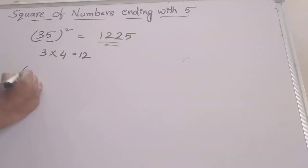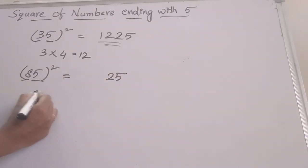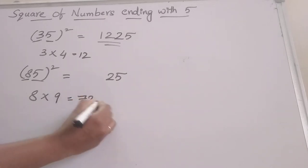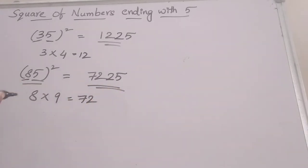Next, we can take one more example: finding the square of 85. Same process - we divide it into two parts. 5 squared is 25. This 8 should be multiplied with 9. 8 times 9 is 72. Write 72 here. 85 squared is 7225. This is the answer.